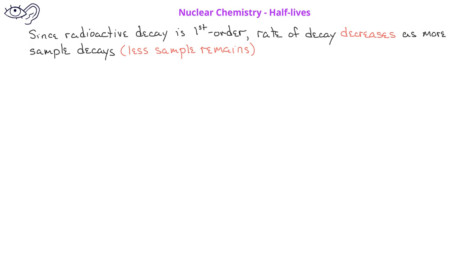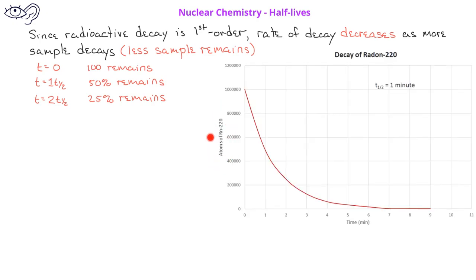After one half-life, 50% of the sample remains, but after two half-lives, 25% of the original sample remains. This can be seen in a graph of the number of radon-220 nuclei versus time.